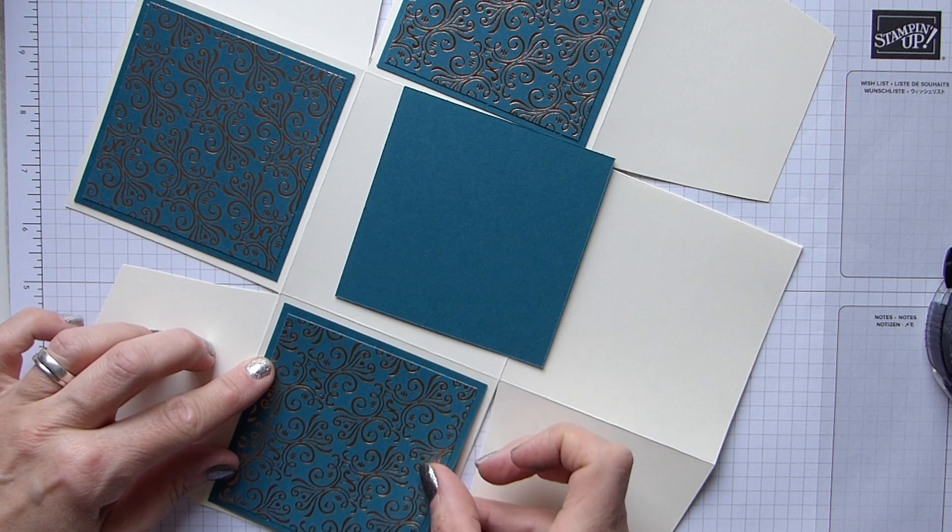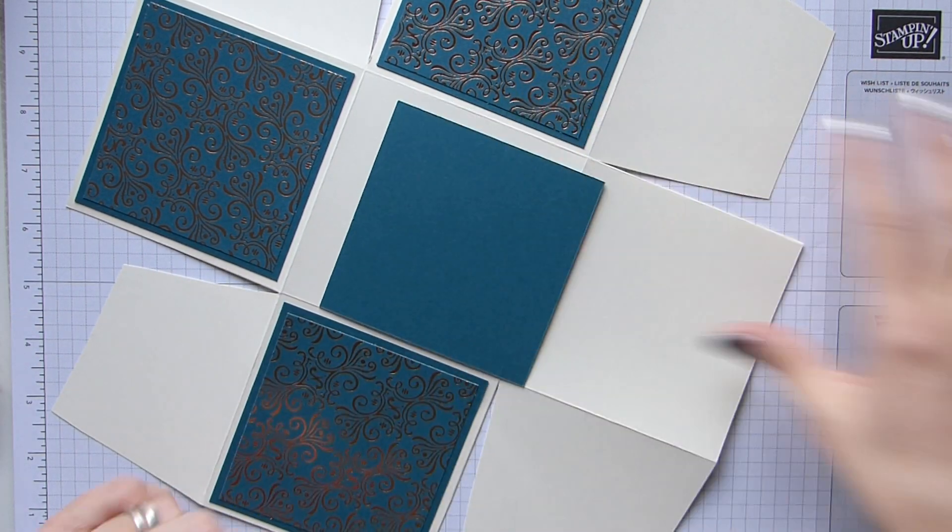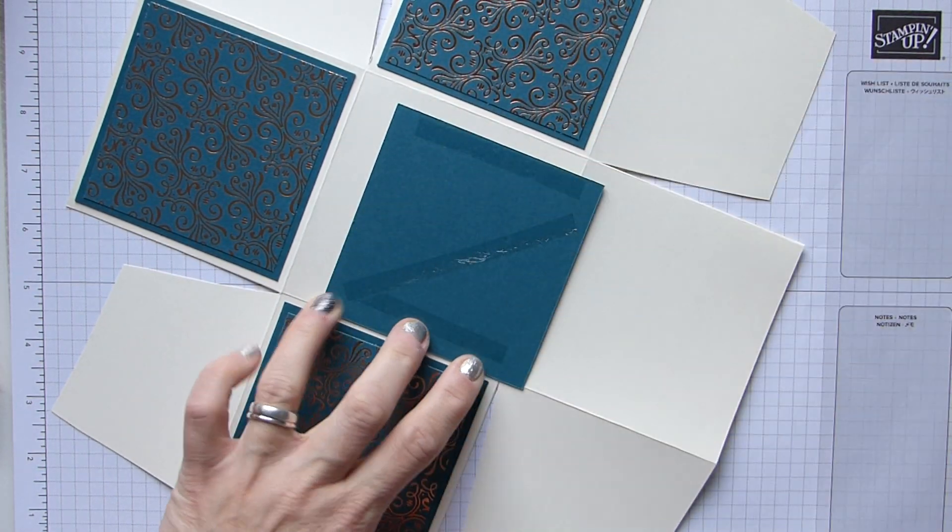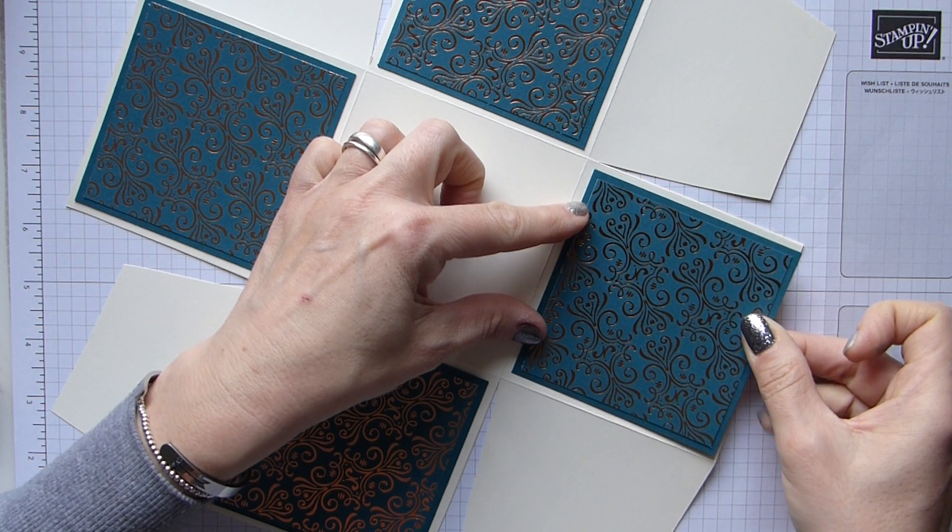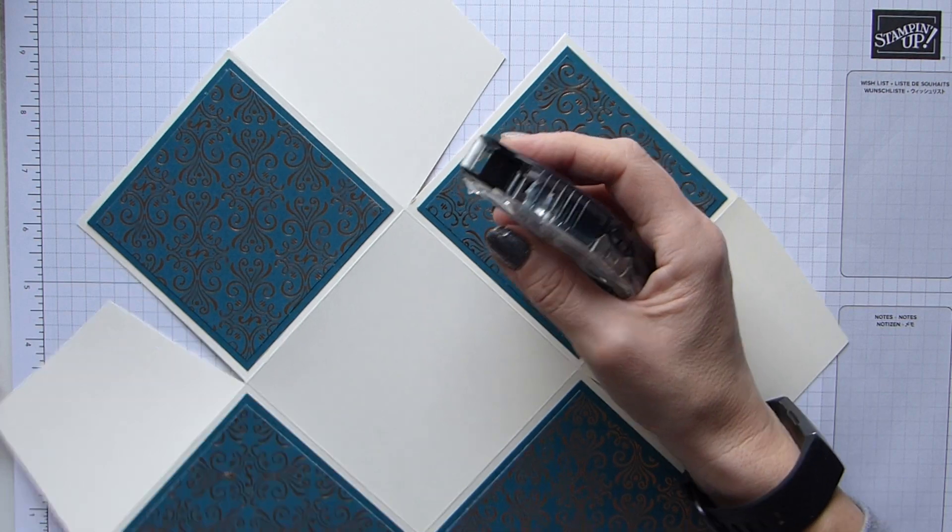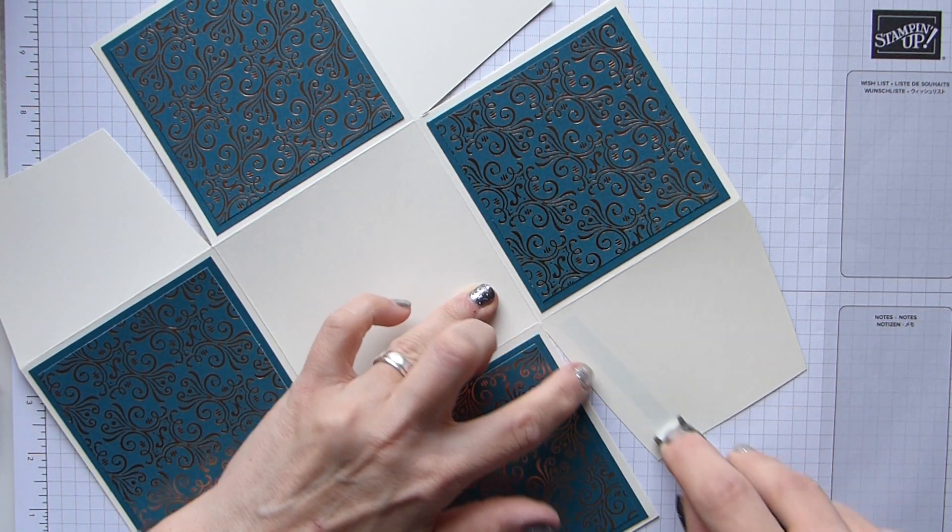I'm just going to whiz that on there, last one. Again you can use your wet glue, you can use Tear and Tape, double-sided tape, whichever. And then again just going to stick these on the sides here or four sides. It is a really simple simple one to make and also really pretty.